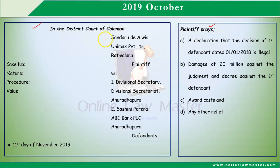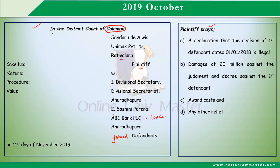In the caption, you can identify that the case has been filed in the District Court of Colombo. Sandarudu Anluis, whose company is in Ragamalana, is the plaintiff. There are two defendants — joint defendants. The first defendant is the Divisional Secretary at Anuradhapura, and the second defendant, or co-defendant, is Shashini Pereira of ABC Bank PLC, Anuradhapura — the bank from which the company obtained the loan. The caption also shows the case number, nature, procedure and value.